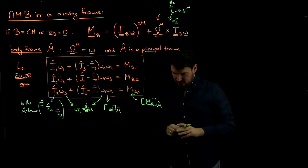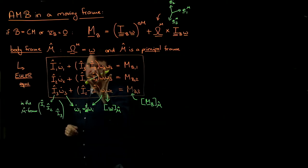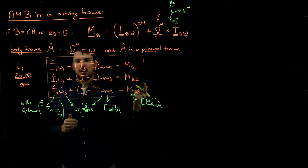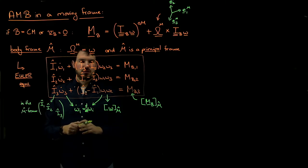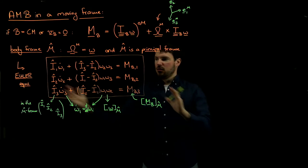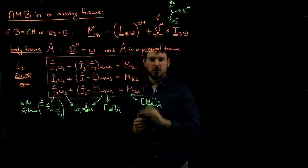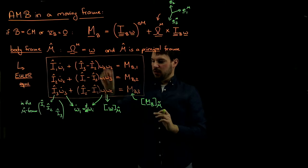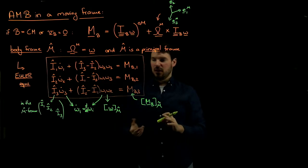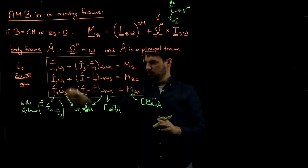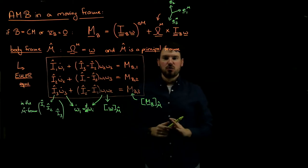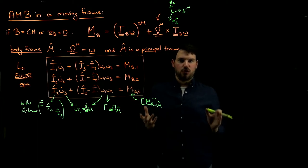We've seen examples in class where we can actually interpret the extra terms as coming from Coriolis or centrifugal forces. But if you use the Euler equations, we don't have to worry about that. All we need are the three torque components in the moving frame, the angular velocity in the moving frame, the moment of inertia tensor components in that frame, and the omega dots — plug those in and there's no need to worry about real or inertial forces.